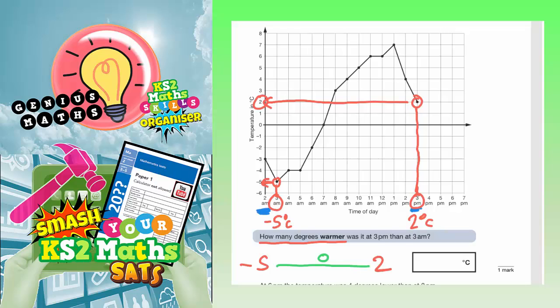So that can help us, because from 0 to 2, that's a gap of 2, and from 0 down to minus 5, that's a gap of 5. So basically, we've got a gap of 5 plus a gap of 2, which makes a total gap of 7. So 5 plus 2 is 7. So your final answer for that question is 7 degrees.